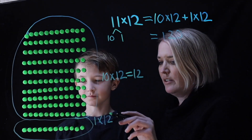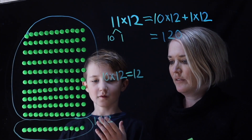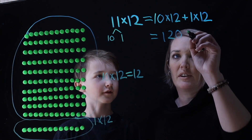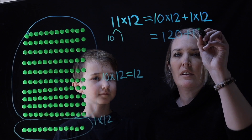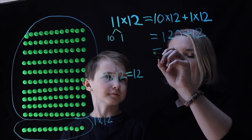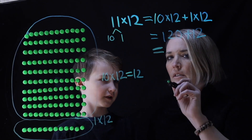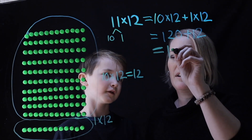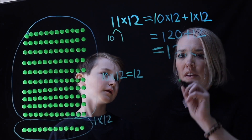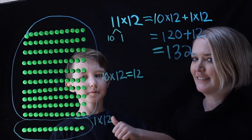And how many are here? This is 1 times 12, so 12. Just 12, yeah. So what is 120 plus 12? 132. That was awesome, Louie. Thanks. Bye.